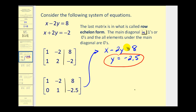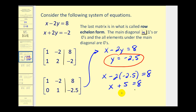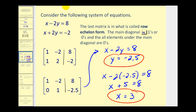Now we can perform back substitution to find x. Substituting into the first equation: x minus 2 times negative 2.5 equals 8, which gives x plus 5 equals 8, so x equals 3. This last matrix is called row echelon form, which means the main diagonal consists of 1s or 0s, and all elements below the main diagonal are 0s. In this case, the element below the diagonal is 0, confirming it is row echelon form, which makes the system much easier to solve.